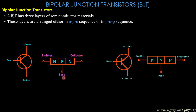There are two classifications in a bipolar junction transistor based on the sequence of arrangement: NPN transistors and PNP transistors. In NPN transistors, the P junction is in the center and the N junction is on both sides.